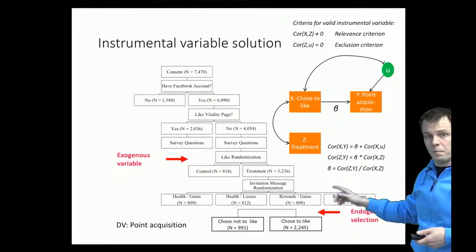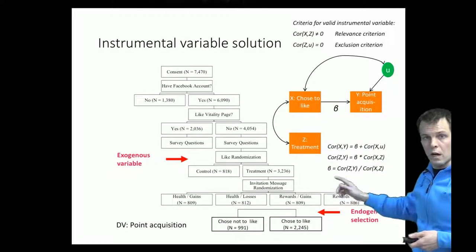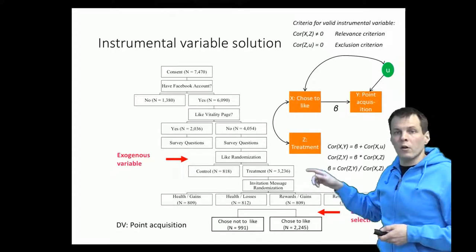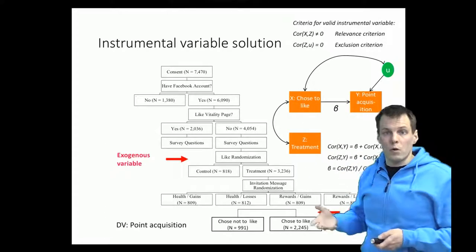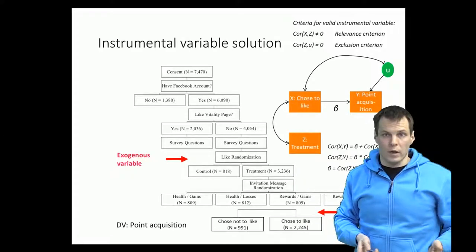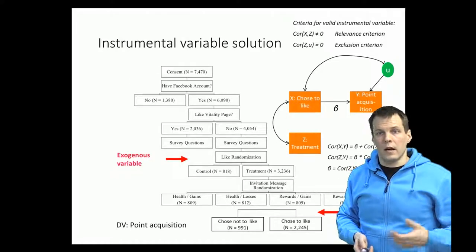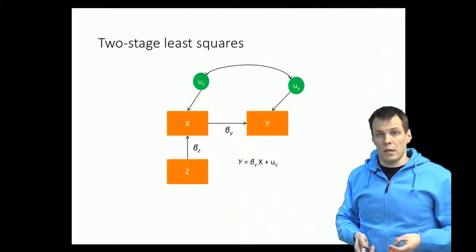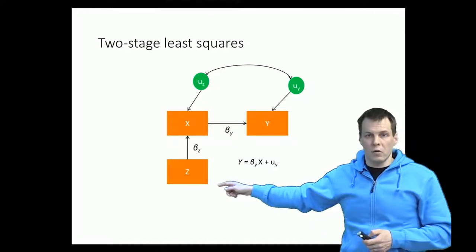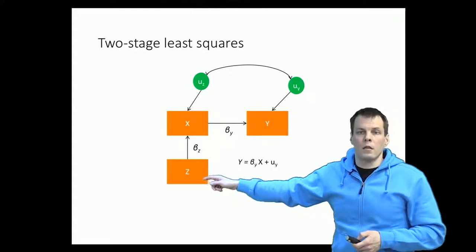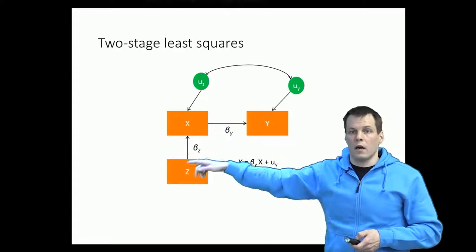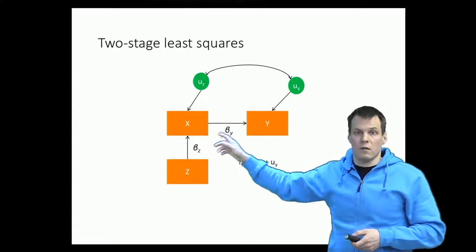They can then apply these equations to calculate the effect of one Facebook like. In practice we don't work with those equations directly because we usually have multiple variables, controls, and potentially multiple instrumental variables. One of the simplest techniques is called two-stage least squares. The idea is that when we take the instrumental variable z, instead of just noting the correlation, we regress x on z and calculate things based on those regressions.